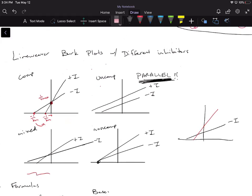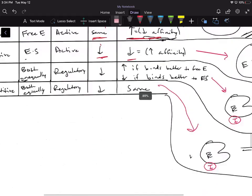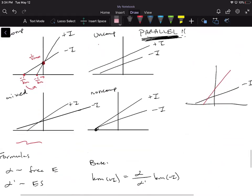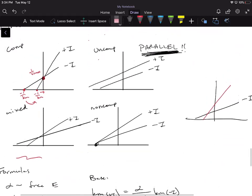Remember, we said that for mixed inhibitors there's two things that can happen to the Km. The Km could either increase or decrease, if it binds better to the free enzyme versus the ES complex.